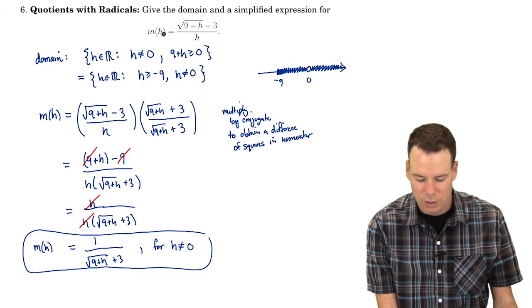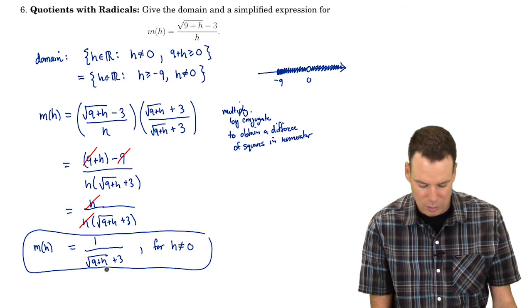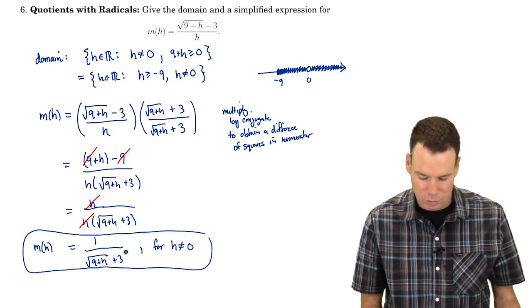So when h is really close to zero what's the values of my function getting close to? Well I plug h equals zero into this expression and I see they're getting close to one-sixth. So the values of the function again close to one-sixth.